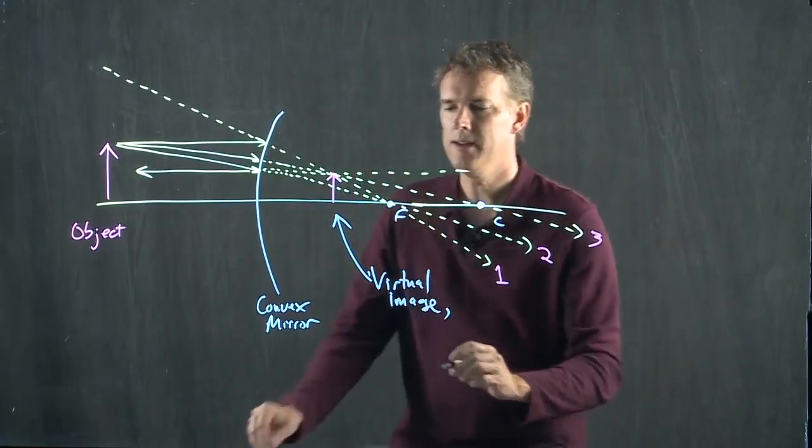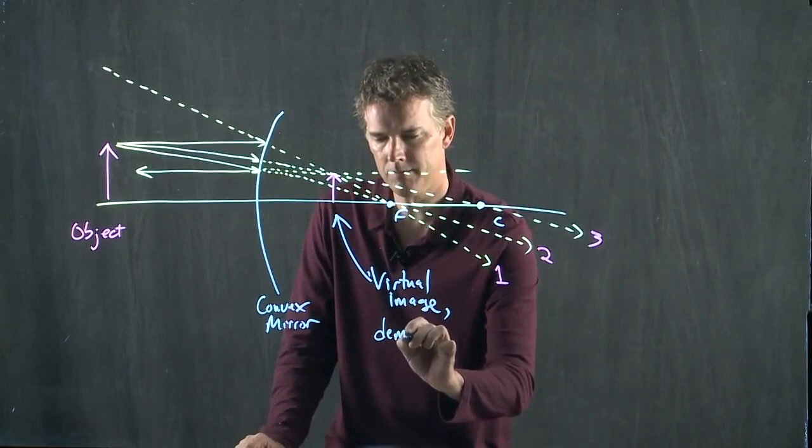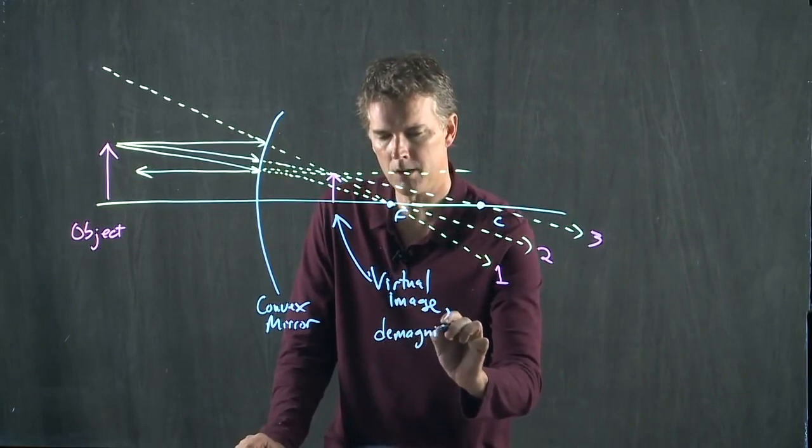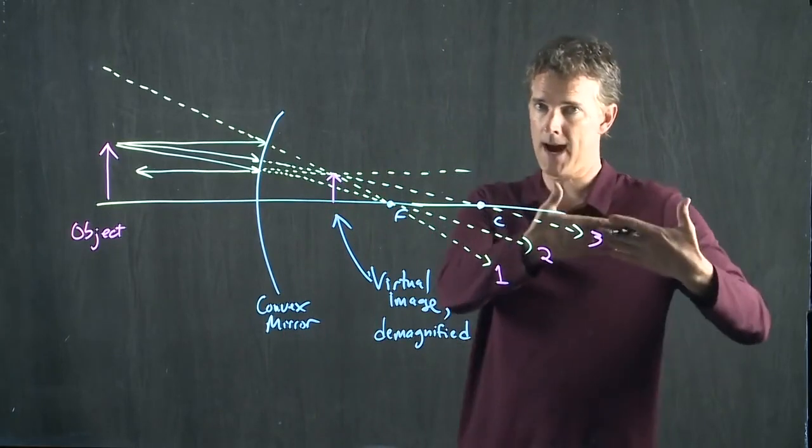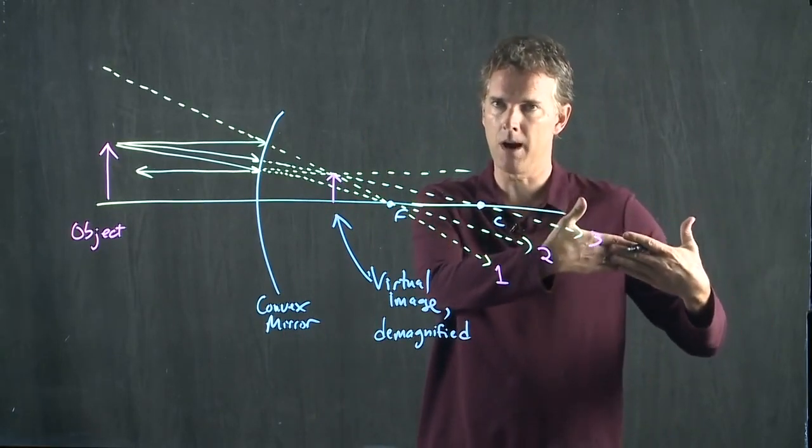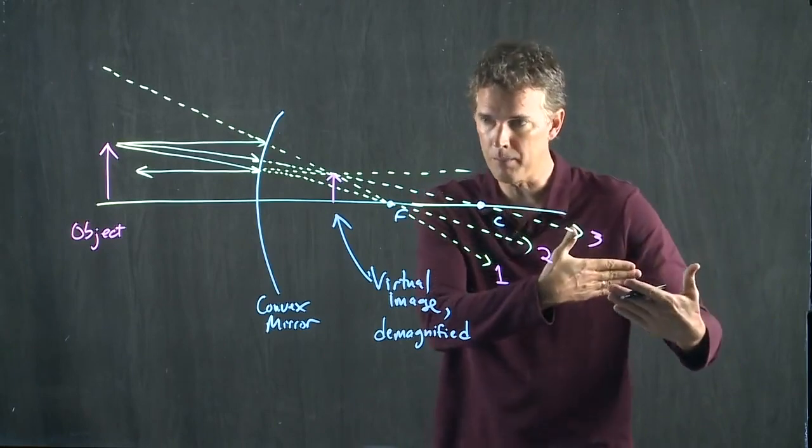It is also demagnified because it's smaller than the object. And this is what they mean by the passenger side mirror: objects in the mirror are closer than they appear.